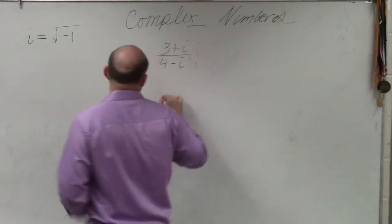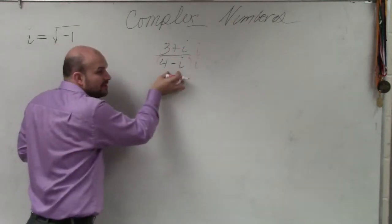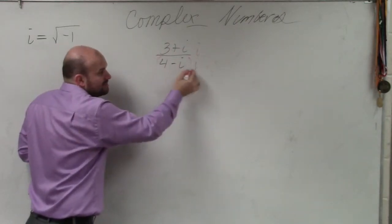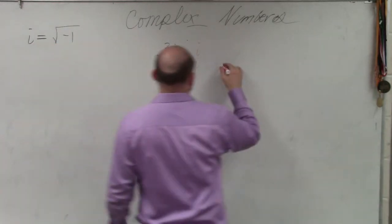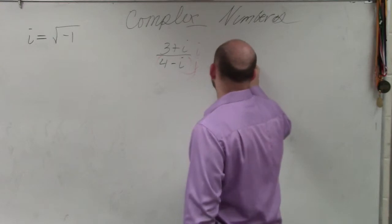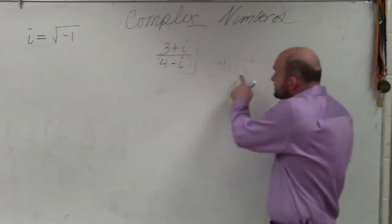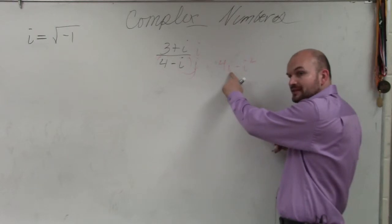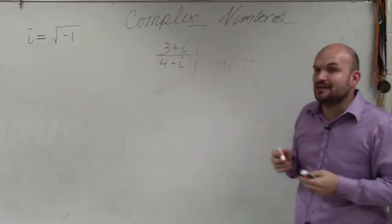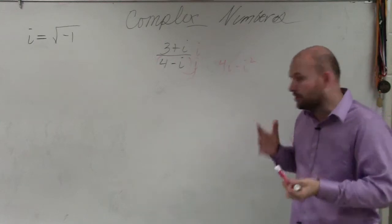But the problem with this is you don't have just one common term. You have an expression. So you'd have to multiply both terms by i. So therefore, you would get 4i minus i squared. Yes, the i squared gets rid of the i here, but now you have another i in the denominator. So if you just multiply by i, you're not going to eliminate the i in the denominator. And that's our purpose.